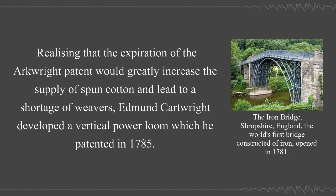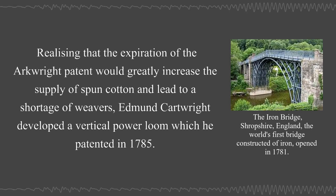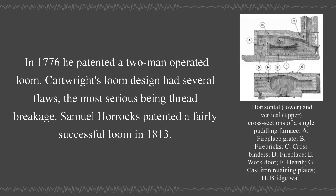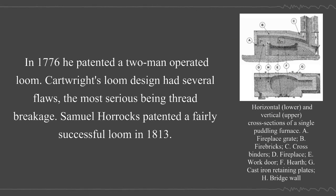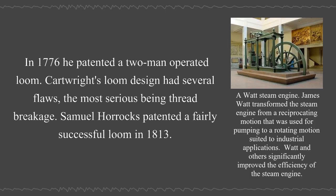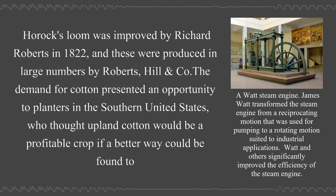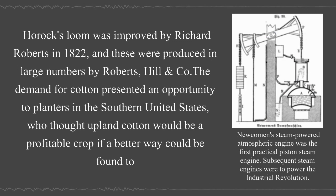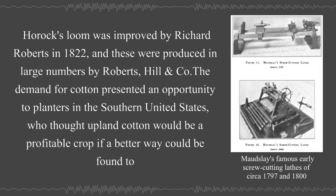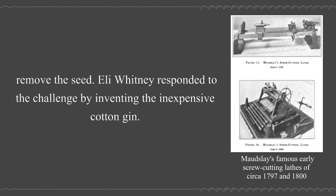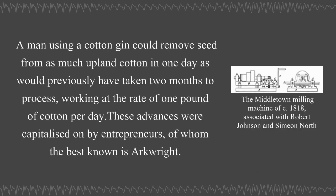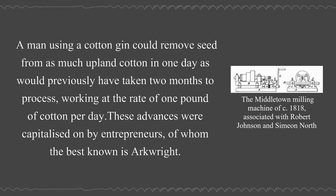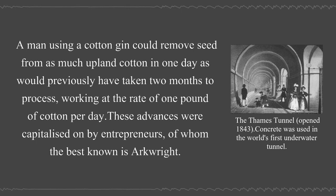Realizing that the expiration of the Arkwright patent would greatly increase the supply of spun cotton and lead to a shortage of weavers, Edmund Cartwright developed a vertical power loom which he patented in 1785, and in 1776 he patented a two-man operated loom. Cartwright's loom design had several flaws, the most serious being thread breakage. Samuel Horrocks patented a fairly successful loom in 1813, improved by Richard Roberts in 1822. The demand for cotton presented an opportunity to planters in the southern United States, and Eli Whitney responded by inventing the inexpensive cotton gin—a man using a cotton gin could remove seed from as much upland cotton in one day as would previously have taken two months to process.